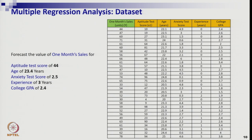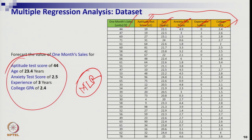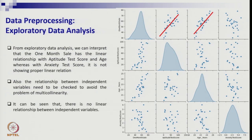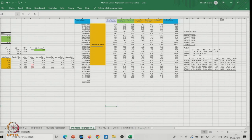Let's look at another example. Suppose we have five independent variables to predict a salesperson's monthly sales: aptitude test score from the interview, age, anxiety score, experience, and academic score (college GPA). We have a good amount of data and want to set up a multiple linear regression. Will all five variables enter the final model, or only some of them? Let's go to Excel.